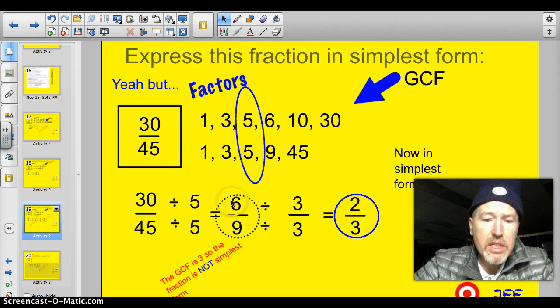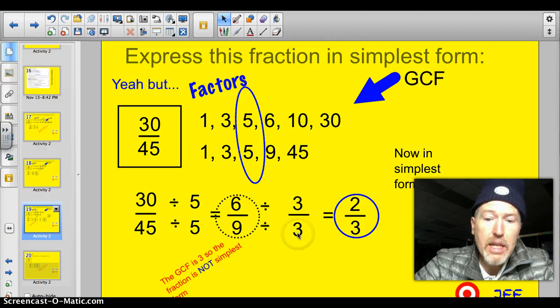You do 30 divided by 5 is 6. 45 divided by 5 is 9. You get into a familiar fraction here of 6/9. But you know that's not in simplest form because you can still put 3 into both. So, 6 divided by 3 is 2. 9 divided by 3 is 3. So, I get to my 2/3 in simplest form. I just had to do it in two steps.